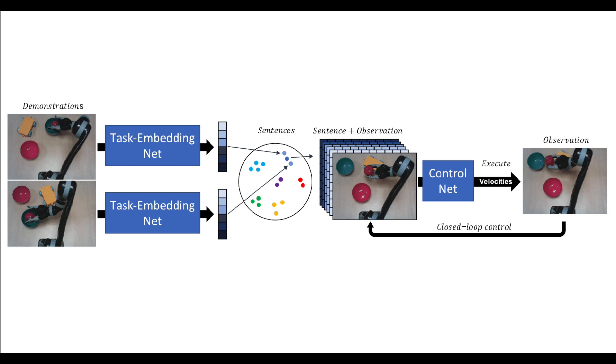Images of demonstrations are embedded via the task-embedding network into a vector that best describes the task. This vector is then expanded and concatenated to the most recent observation from a new configuration of that task before being sent to the control network to produce motor actions.